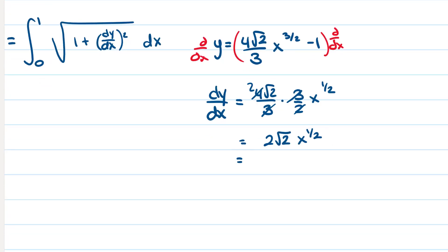You get this is 2 radical 2 x to the 1 half. Then we're going to simplify this a little bit. This is 2 radical 2 times radical x, so it's 2 radical 2 x.